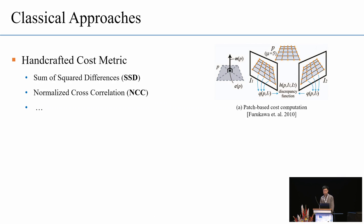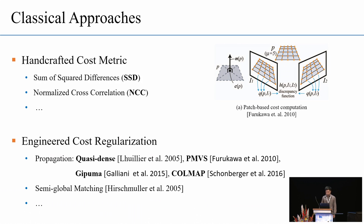The classical multiview stereo solutions utilize the handcrafted matching cost. For example, the sum of square differences and normalized cross-correlation to match pixels in different images. Then, some sophisticated algorithms will be applied to regularize the pixel-wise matching cost. The most popular algorithms for multiview stereo are based on matching propagation. For example, the early cosy-dense reconstruction and the patch-based multiview stereo PMVS and the recent GitPilma and CoMap. Other methods include semi-global matching and global optimizations.